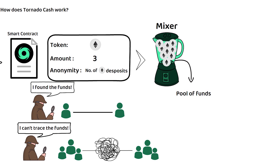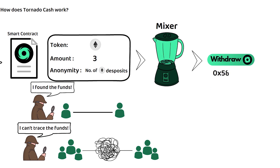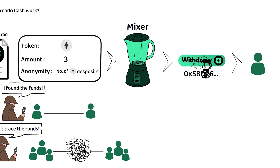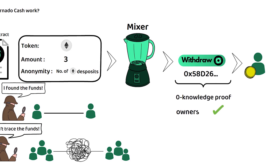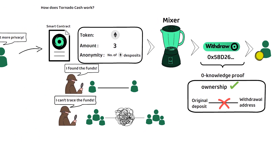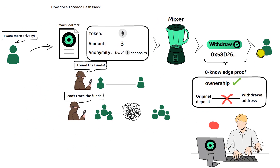Tornado Cash combines the user's deposit with other deposits from the anonymity set to create a pool of mixed funds. This mixing process helps to break the link between the source of the funds and the subsequent transactions. After the funds have been mixed, the individual can initiate a withdrawal request, providing a new Ethereum address where the mixed funds will be sent. At this stage, the zero-knowledge proof is employed to prove ownership of the funds without revealing the connection between the user's original deposit and the withdrawal address. The protocol is designed to ensure that even the operators of Tornado Cash cannot de-anonymize or steal users' funds.